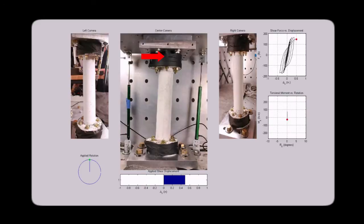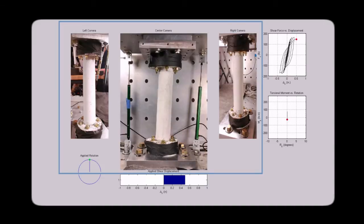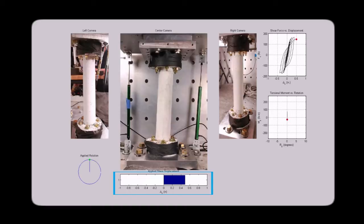In this test, the pier was subjected only to lateral displacement to induce shear stress. The applied displacements and resulting forces can be seen in the graphs on the right, along with a stop-motion video of the experiment from the three angles captured by the cameras. The bar below the center video displays the increasing levels of displacement applied to the pier as the test progresses.